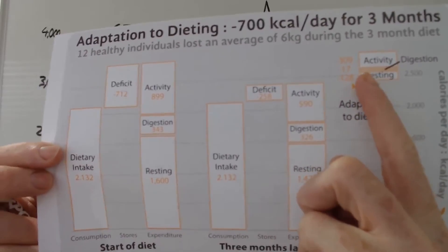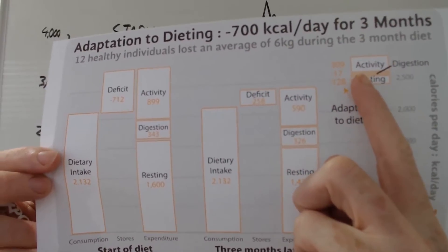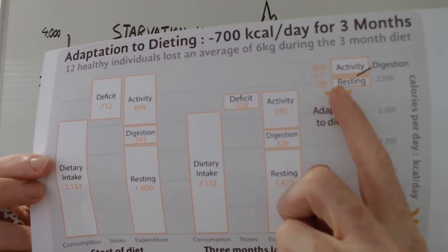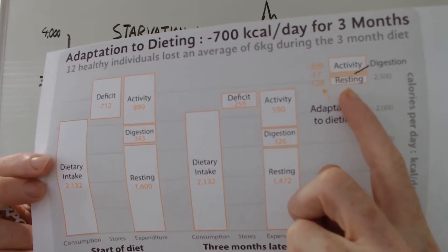So the NEAT, the non-activity thermogenesis, this activity one up here, that is the bit that adapts. And then there's the thermic effect of food, and the resting metabolism adapted a little bit.